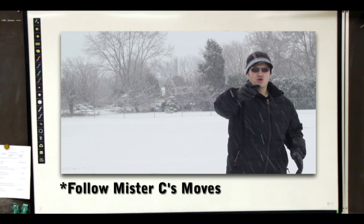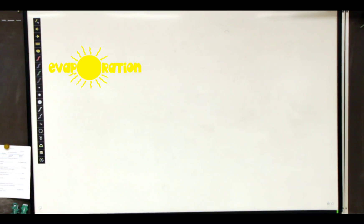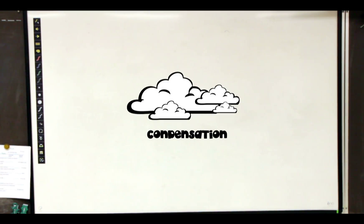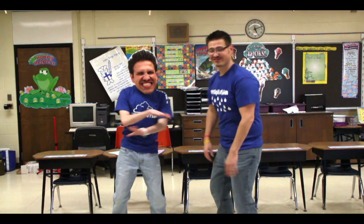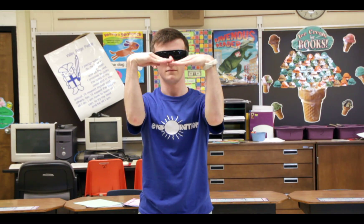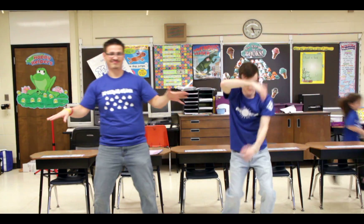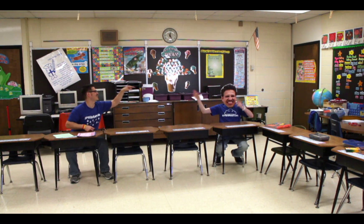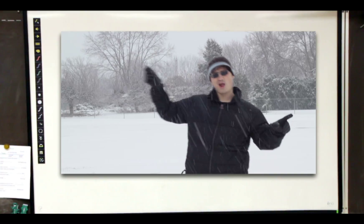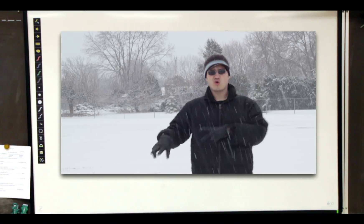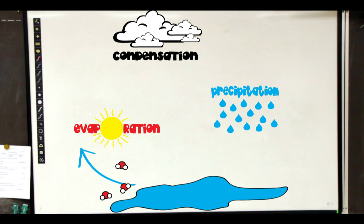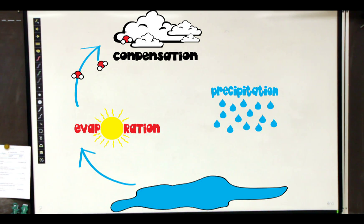The Water Cycle goes round and round, from the sea to the air and back to the ground. The Water Cycle has three different parts, and with evaporation it always starts.